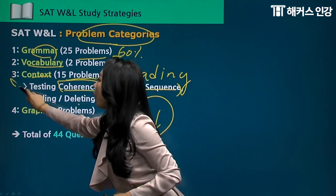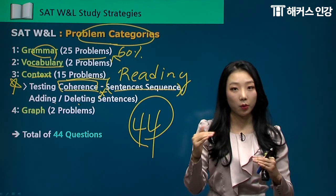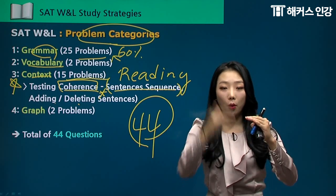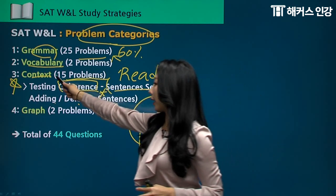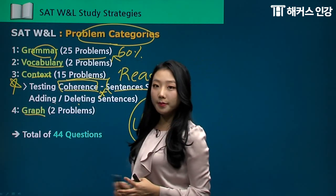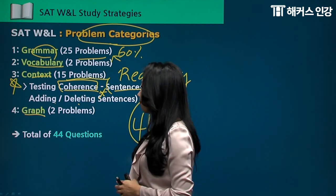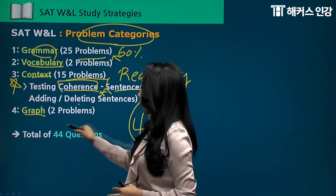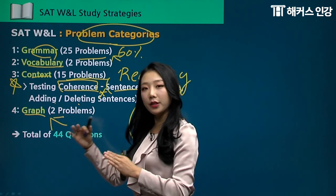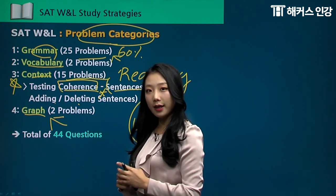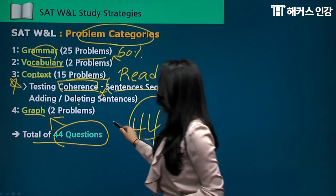Context is the category most students struggle with, because it requires critical thinking and reading the whole paragraph to solve questions correctly. For the graph category, you'll have two problems — data, charts, graphs, anything like that. Make sure you look at the graph. Read the question carefully to see if it refers to a graph rather than being a context problem. That's a total of 44 questions across those four categories.